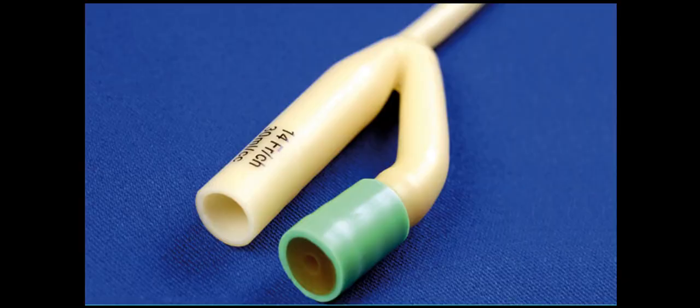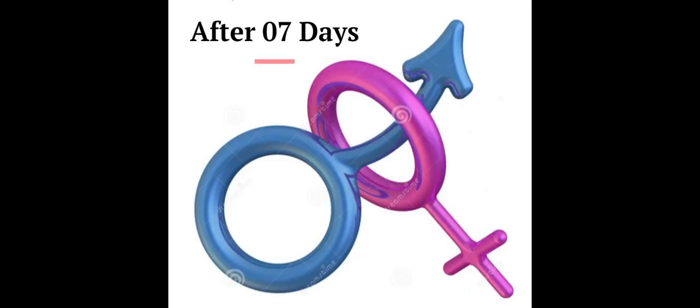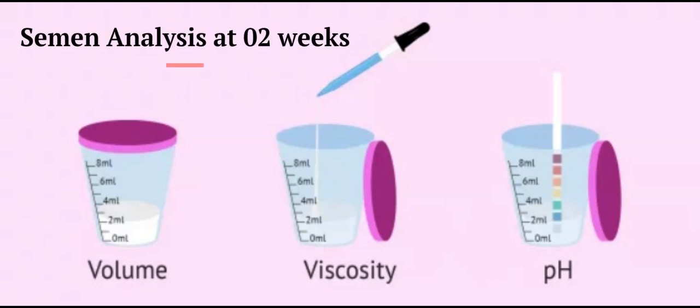A small Foley catheter is placed for 24 to 48 hours and removed on an outpatient basis. Oral antibiotics are given while the catheter is in place. After such treatment for infertility, intercourse is resumed after seven days, and a formal semen analysis is checked as early as two weeks and then at regular intervals thereafter, until semen quality stabilizes.